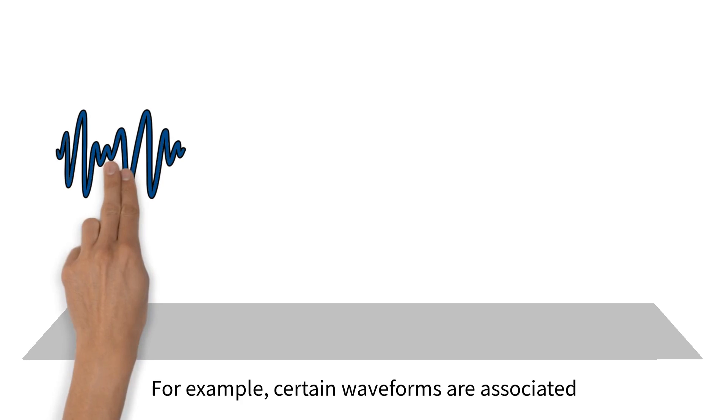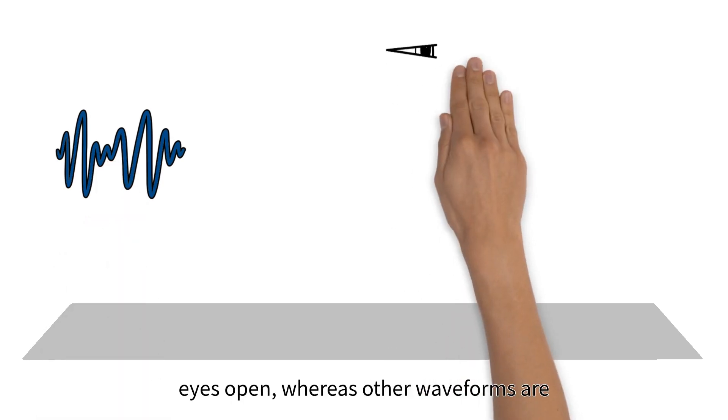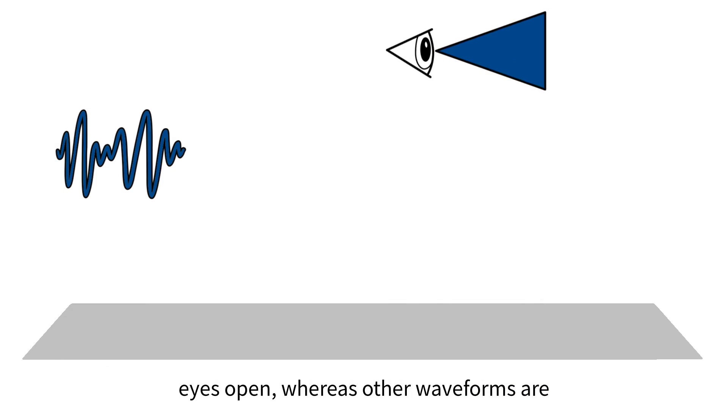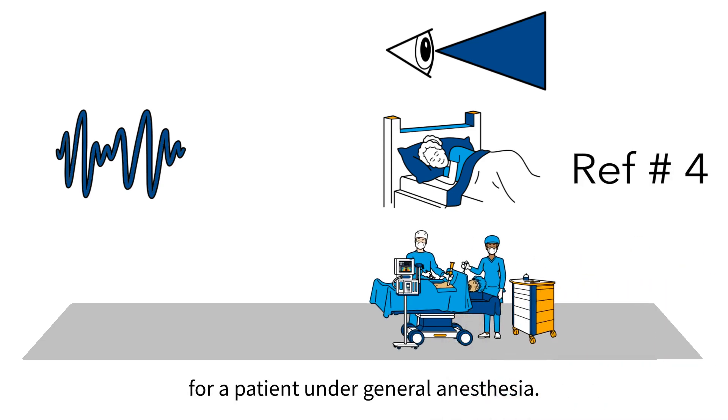For example, certain waveforms are associated with a person who is awake with their eyes open, whereas other waveforms are associated with a person who is in REM sleep, and more waveforms still for a patient under general anesthesia.